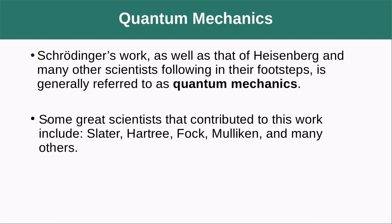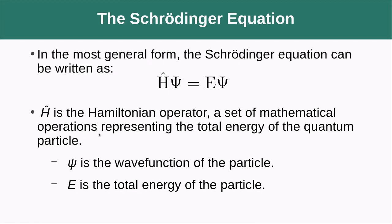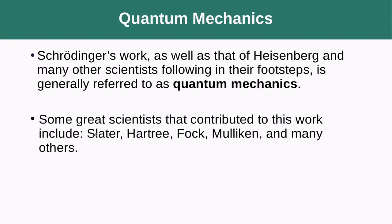Schrödinger's work, along with Heisenberg's and many others, laid the groundwork for quantum mechanics. Other great scientists contributed: Slater spelled out functions describing electron orbitals; Hartree developed methods for calculating orbitals and energies; Fock perfected Hartree's work; Mulliken worked on spin-spin coupling and electron-electron interactions through the 1960s. Many people still work in this field today.